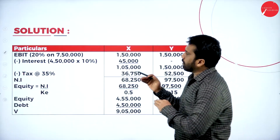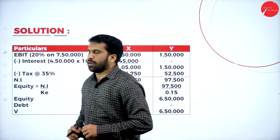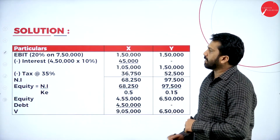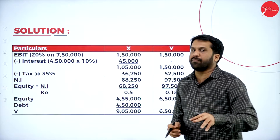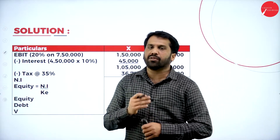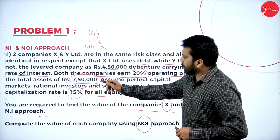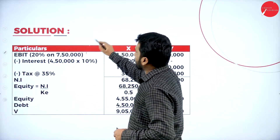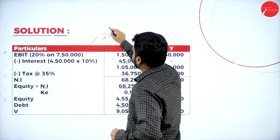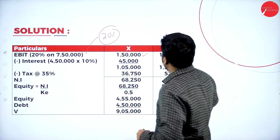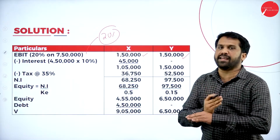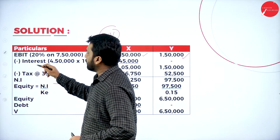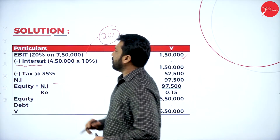We'll go for the normal calculation since net income is not given in the question. First, we calculate EBIT — Earnings Before Interest and Tax. The total asset value is 7,50,000. At 20 percent, 7,50,000 × 20% = 1,50,000. This EBIT of 1,50,000 is common for both X and Y. Next, we subtract interest.